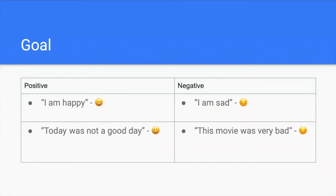As shown in the slide, I created a table where each one of these tweets were passed into the machine learning model and outputted whether there was a positive or negative connotation with it. For example, 'I am happy' is put as positive, while 'I am sad' is put as negative.